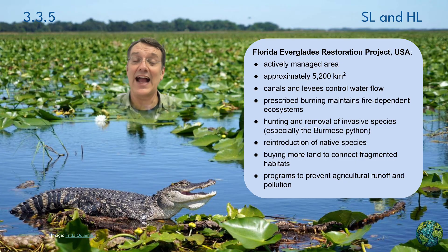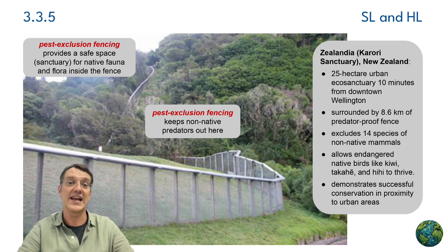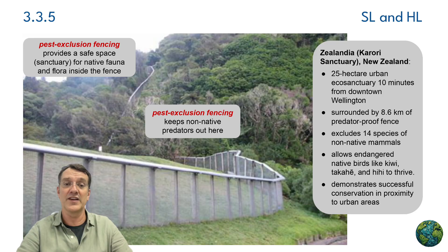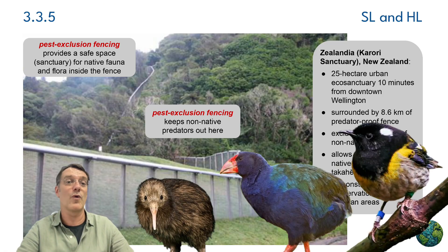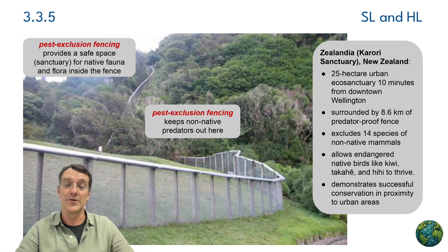Zealandia in New Zealand demonstrates a third approach: pest-exclusion fencing to create eco-sanctuaries. This 25-hectare urban sanctuary near downtown Wellington is surrounded by almost 9 kilometers of predator-proof fencing that keeps 14 species of non-native mammals out. This allows endangered native birds like kiwi, kākāpō, and hihi to thrive, while demonstrating successful conservation in proximity to urban areas where people can access it for education and awareness.